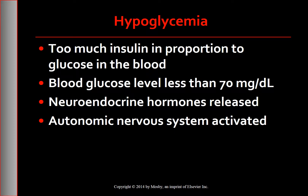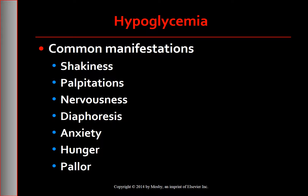The next complication is hypoglycemia. Hypoglycemia, or low blood glucose level, occurs when there is too much insulin in proportion to available glucose in the blood, causing the blood glucose level to drop to less than 70 mg/dL. When plasma glucose level drops below 70, neuroendocrine hormones are released and the autonomic nervous system is activated. Epinephrine release causes manifestations including shakiness, palpitations, nervousness, diaphoresis, anxiety, hunger, and pallor.